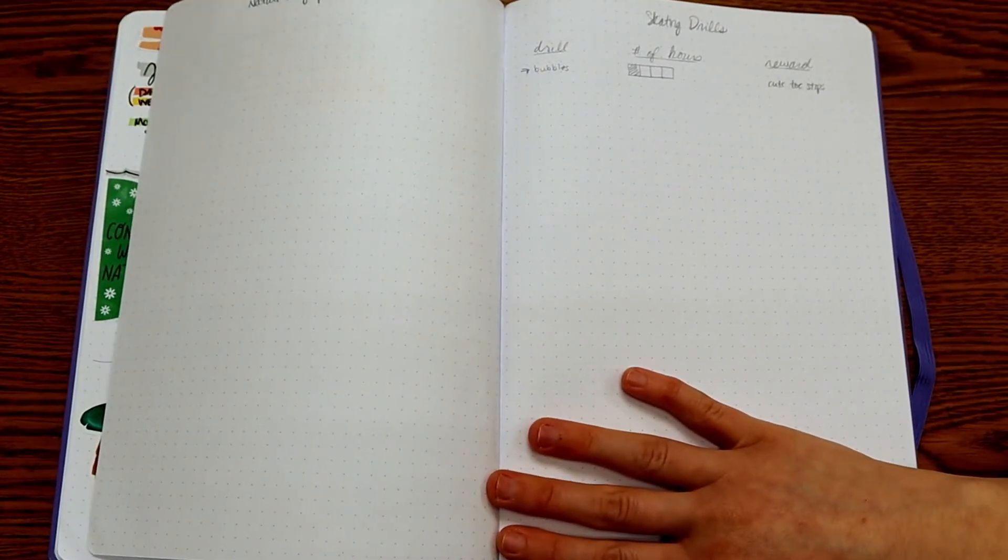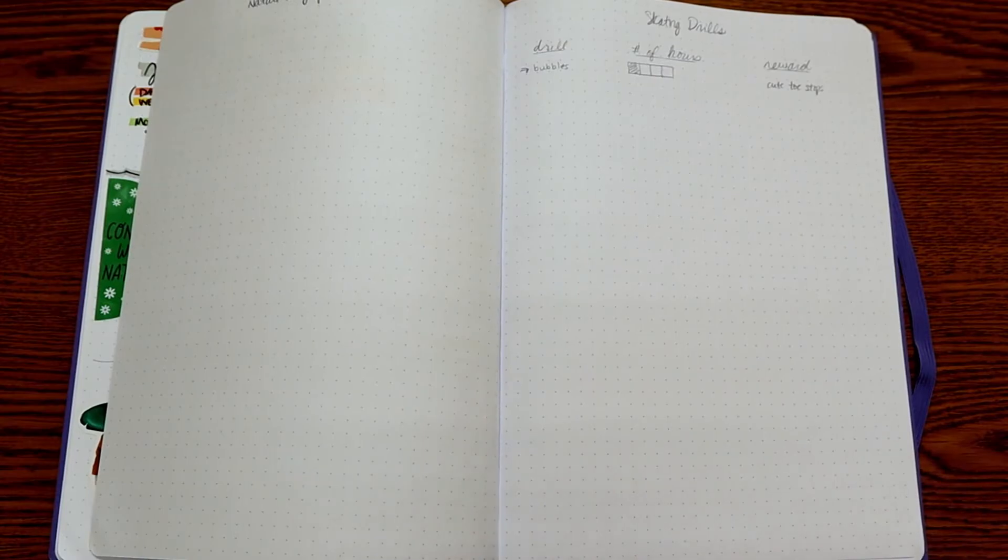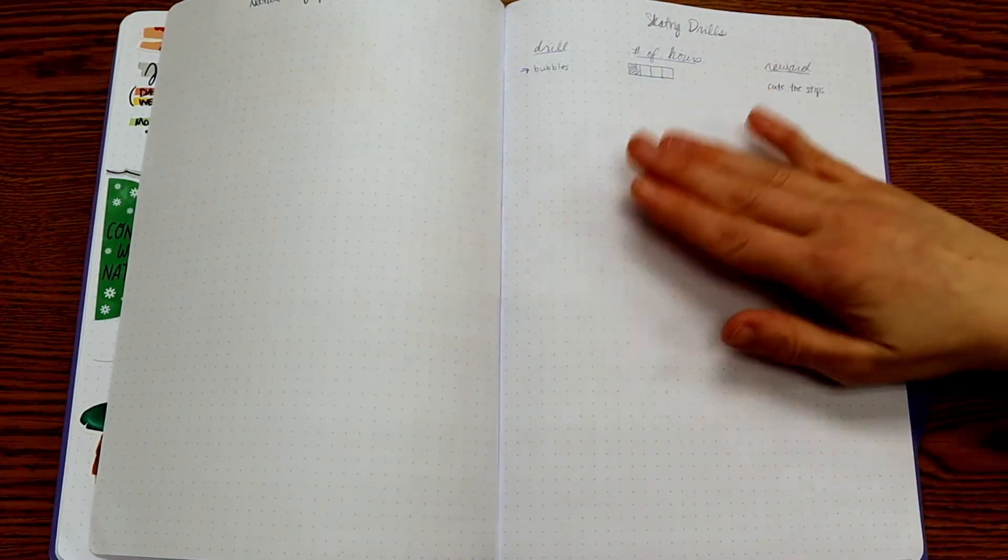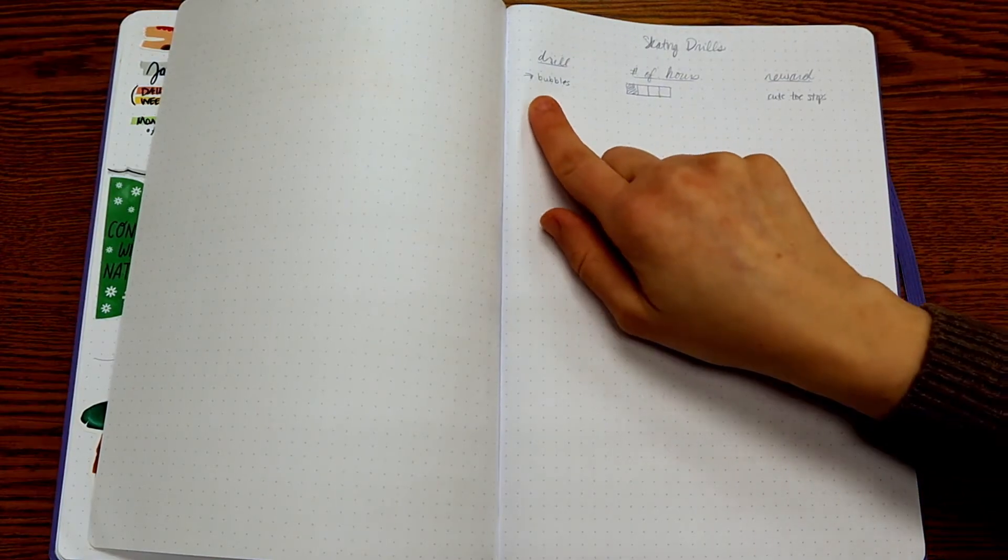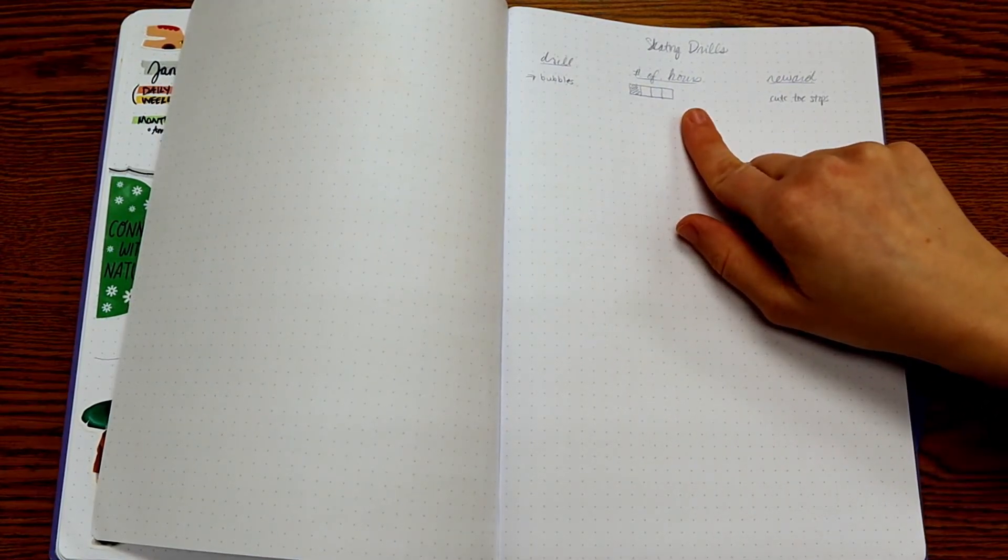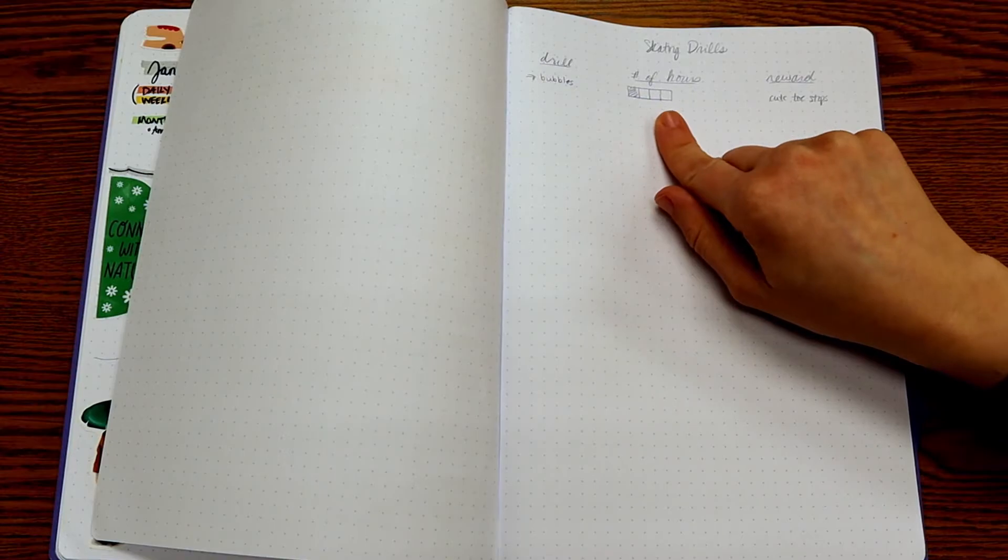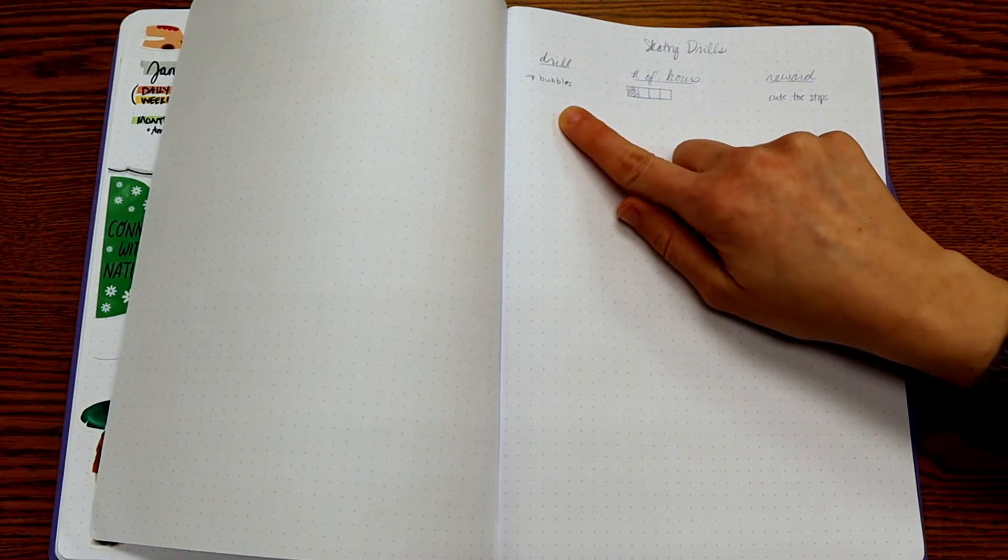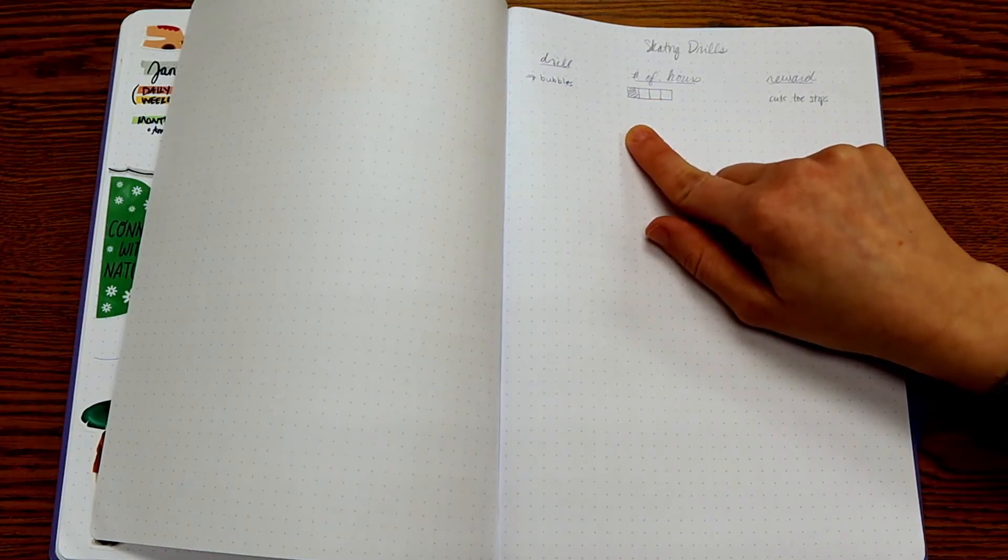And then another type of tracker that you could do, I am learning how to roller skate. So I want to have a page for my skating drills. So the drill would be bubbles. The number of hours I said about four hours would probably be right. So then every time I do an hour of this drill, then I can shade in that box.